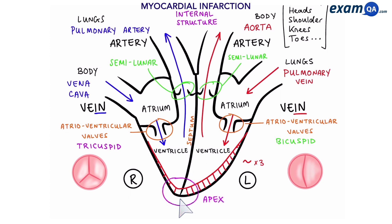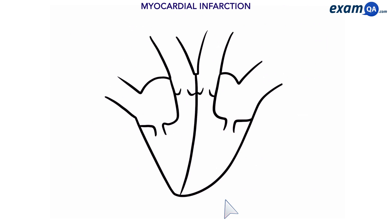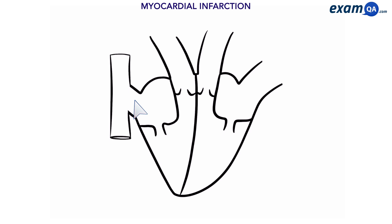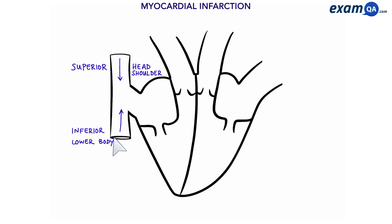This part of the heart is called the apex. Now for a bit more detail: the vena cava has two ends — the superior side and the inferior side. The superior side brings blood in from the head and shoulders, or the upper body, and the inferior side brings blood in from the lower body. Both eventually enter the right atrium.